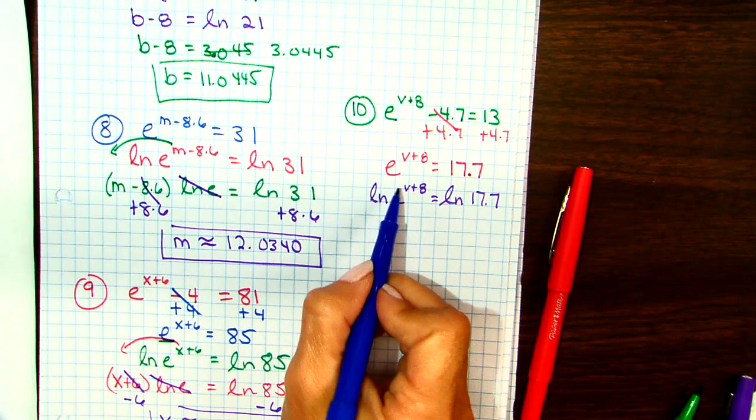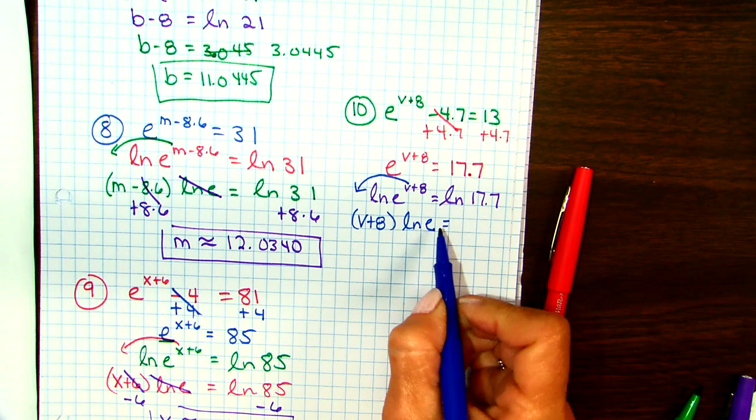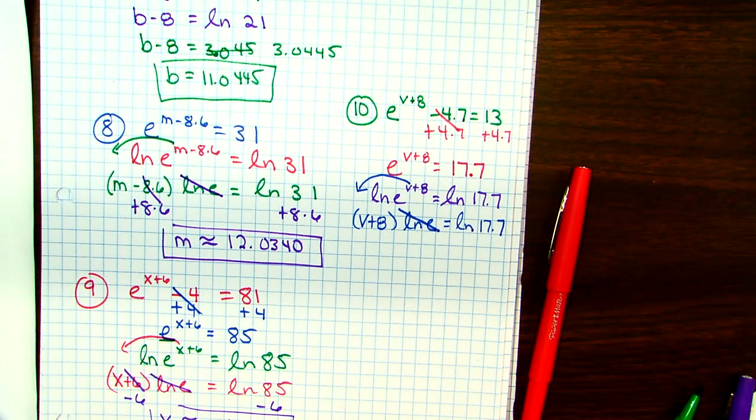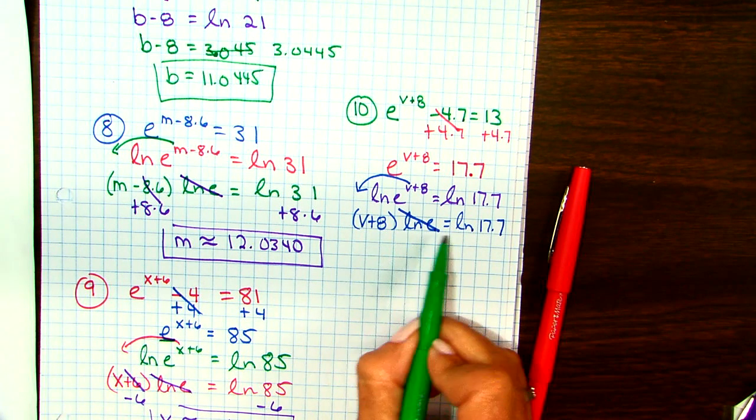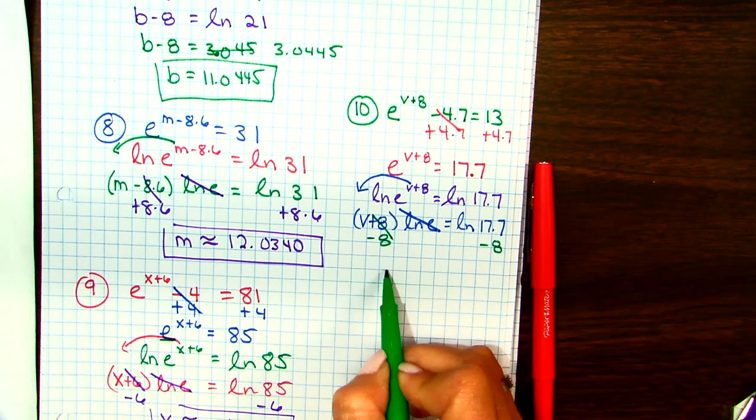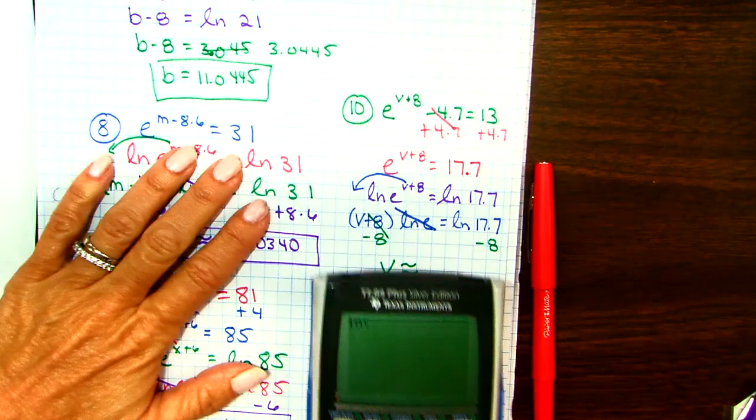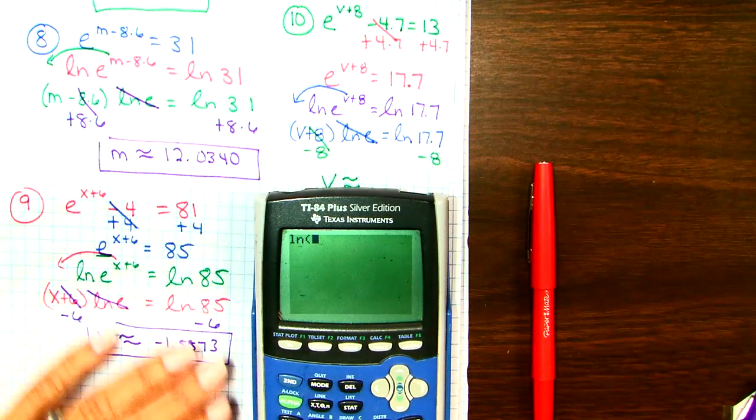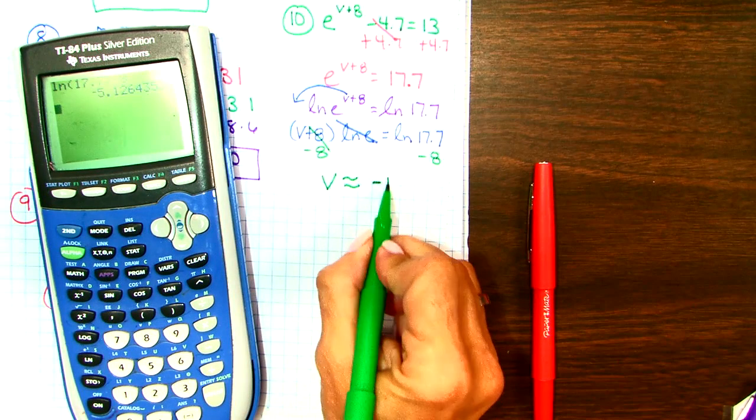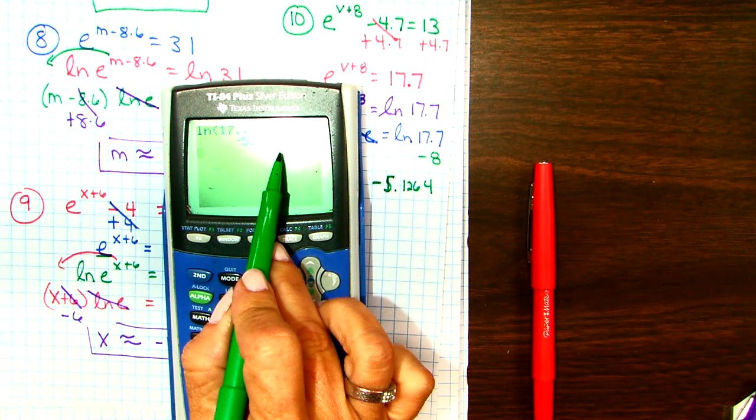So now it's cleaned up, and I can give both sides a natural log. Now that it's a log problem, I can use my properties, bring down the exponent. I mean, you guys can see these are pretty repetitive. Once you realize, oh, this is all we're doing, it's the same thing, really, over and over again, right? The natural log E goes away. And so I have V plus 8 equals natural log of 17.7. So let me go ahead and combine those two steps. So I'll have natural log. Natural log of 17.7, close my parentheses, minus 8, equals negative 1, I'm sorry, negative 5.1264. The 3 is the boss of the 4, and it tells it to stay the same.